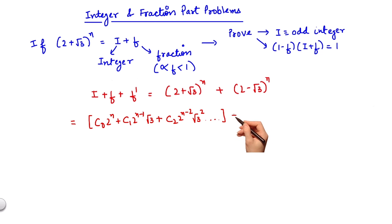The expansion of the second series would be c0 2 to the power n minus c1 2 to the power n minus 1 root 3 plus c2 2 to the power n minus 2 root 3 square and so on. It is clear that from this expansion,